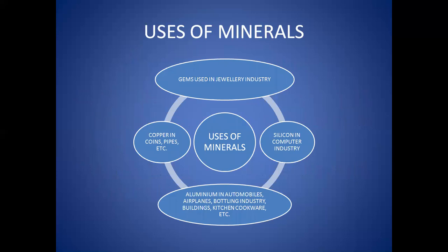Now coming to the uses of minerals. Children, minerals are very useful to humans and are used in many industries. Minerals which are used for gems are usually hard and are set in various styles for jewellery. Copper is used in everything from coins to pipes. Silicon used in the computer industry is obtained from quartz. Aluminium, obtained from its ore bauxite, is used in automobiles and airplanes, the bottling industry, buildings and even in kitchen cookware.